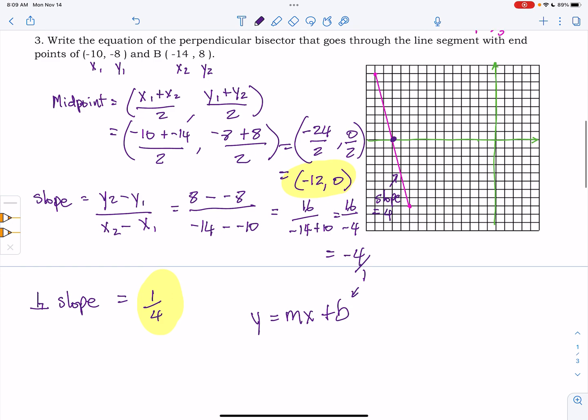And that's all we need in order to plug into y equals mx plus b in order to find b. So with our point, we have, let's label this x and y. We have 0 is equal to 1 fourth, x is negative 12, plus b.